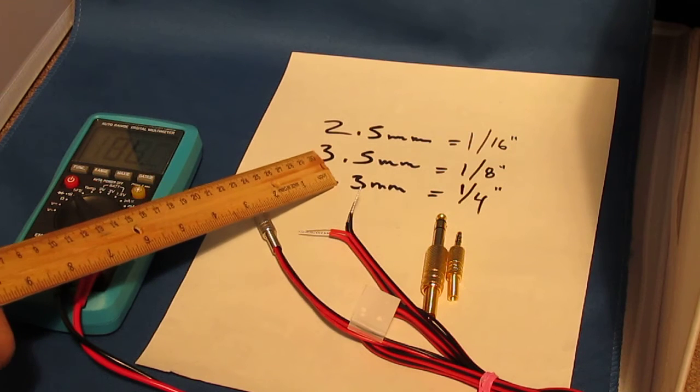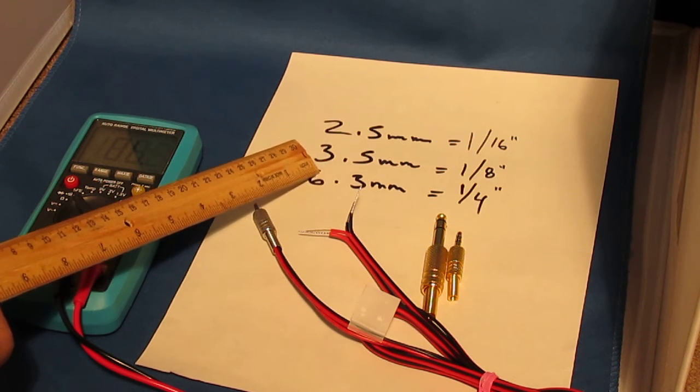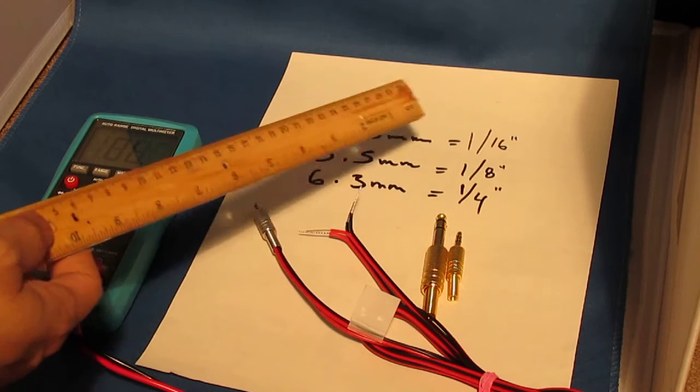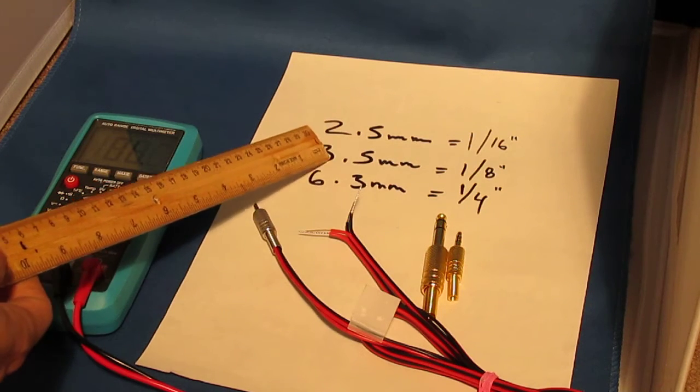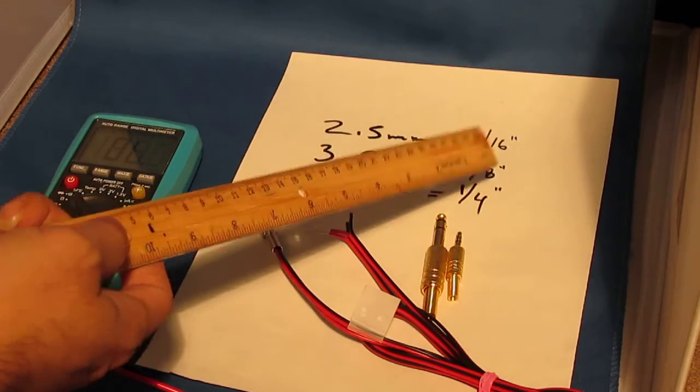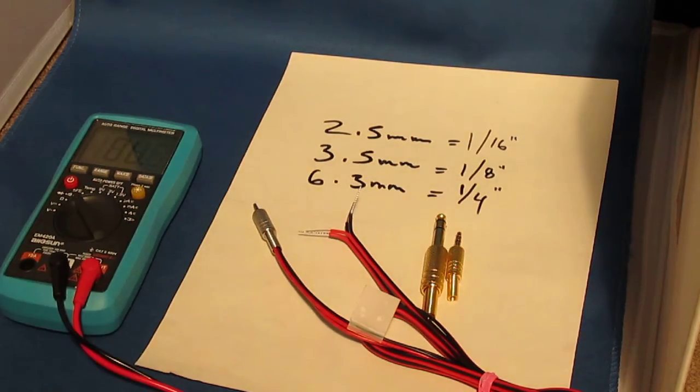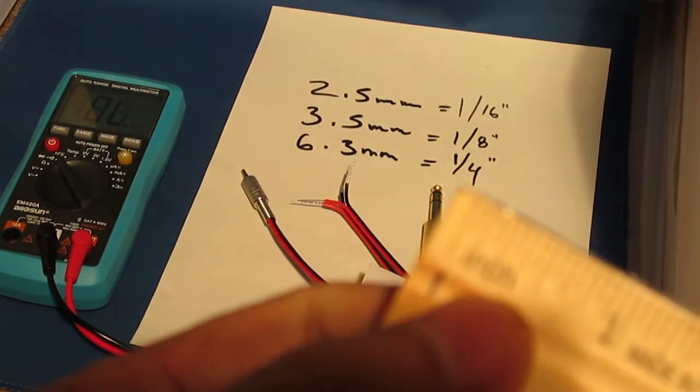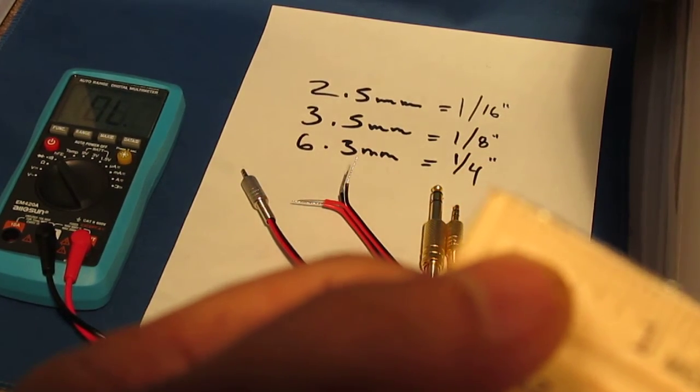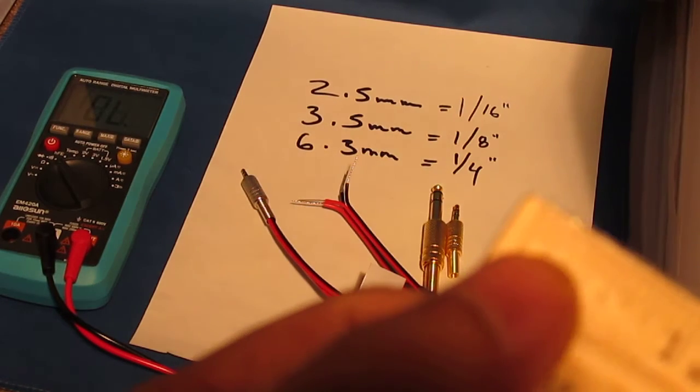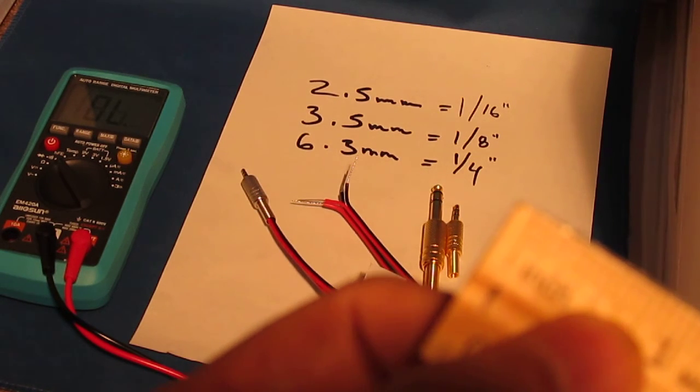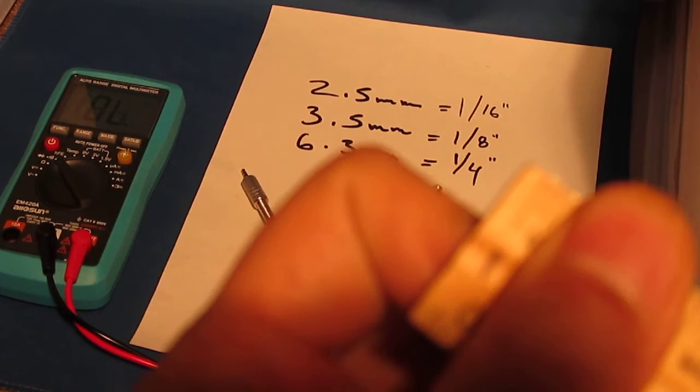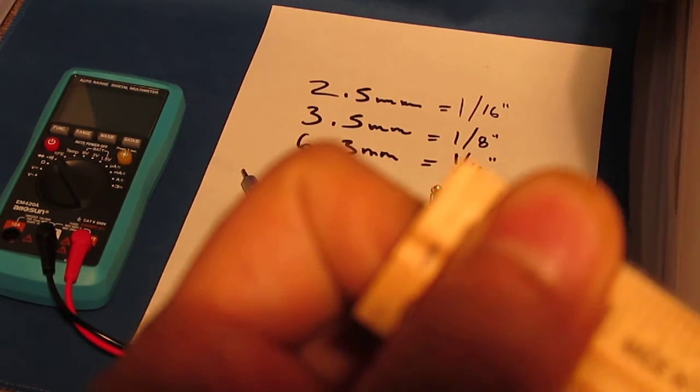But most of the market right now is 3.5, but like I said, double check on that first. Last but not least, the 6.3. They are 6.3 millimeter. The standard size is 1/4. I didn't mention the 3.5 millimeter is 1/8, 1/8th of an inch. 1/8th of an inch is right here, right there. So if you count 1, 2, 3, 4, 5, 6, 7, 8, that would be 1/8th of an inch right there.